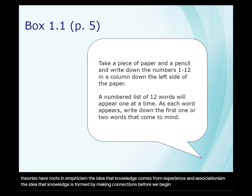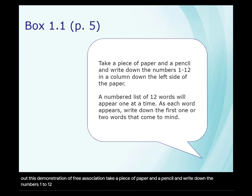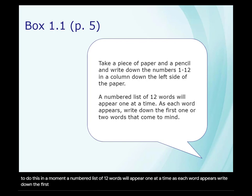Before we begin, take a minute or two to try out this demonstration of free association. Take a piece of paper and a pencil and write down the numbers 1 to 12 in a column down the left side of the paper. Pause the video here if you need some time to do this. In a moment, a numbered list of 12 words will appear one at a time. As each word appears, write down the first one or two words that come to mind. Ready?